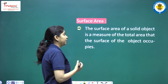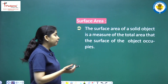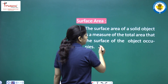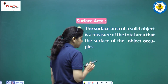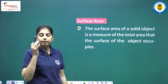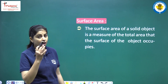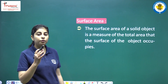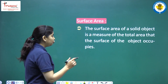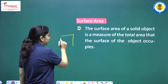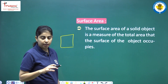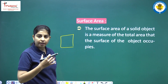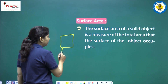Definition — surface area. What is the surface area? The surface area of a solid object is a measure of the total area that the surface of the object occupies. If anyone has a three-dimensional object, we find out the surface area. For a two-dimensional object we find the area. What is a plane? The board is a plane — a rectangle, circle, or square. In that case, we find the area.